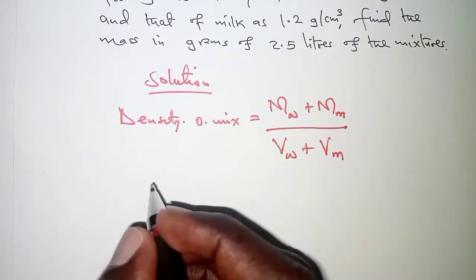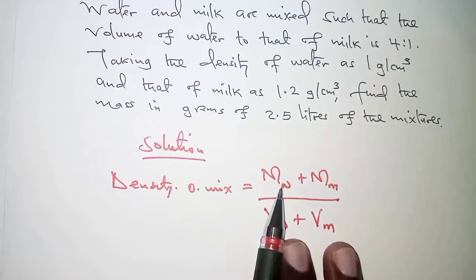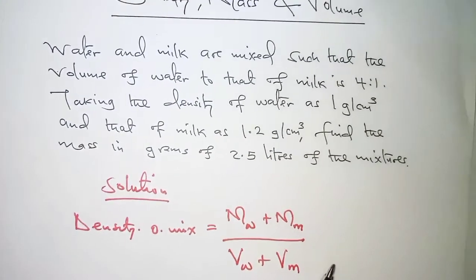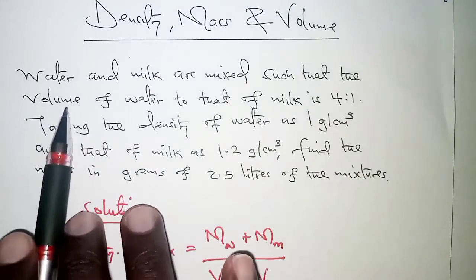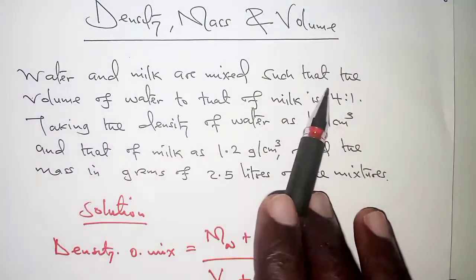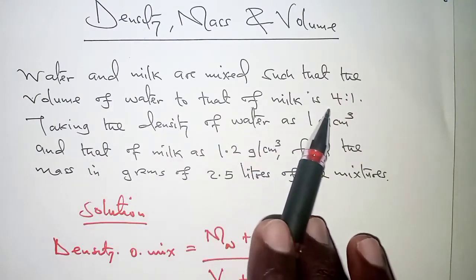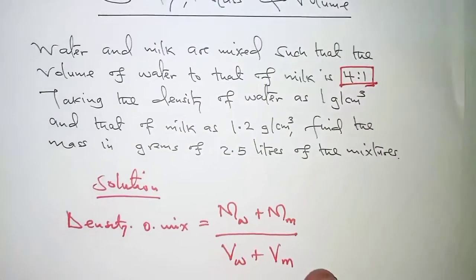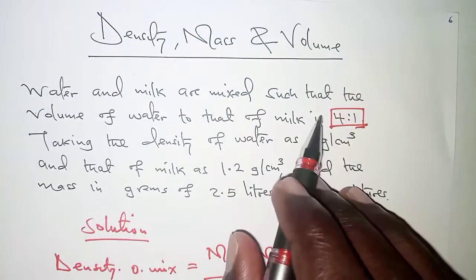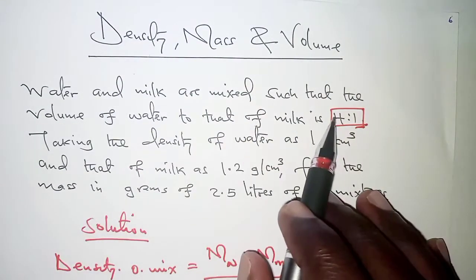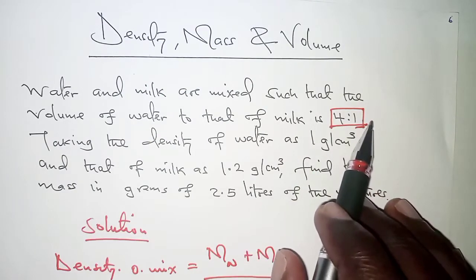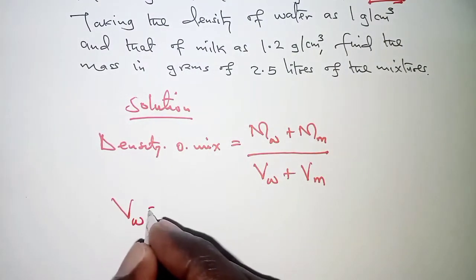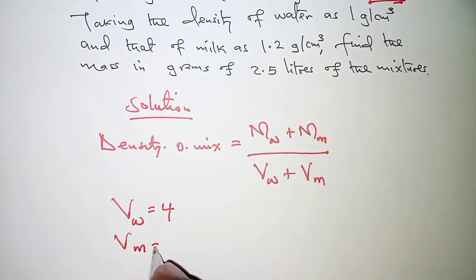We need to know the mass of water, mass of milk, volume of water, and volume of milk. We are told the volumes of water to milk is 4 to 1, so that ratio represents the volumes. 4 represents the volume of water and 1 represents the volume of milk, so we can say the volume of water is 4 and the volume of milk is 1.